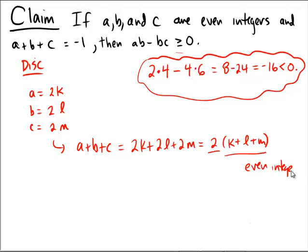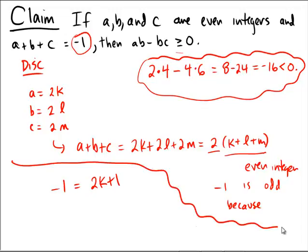However, the antecedent says that that's supposed to be equal to negative one. Negative one is odd because negative one can be written as 2k plus 1. Subtract one from both sides, negative two equals 2k, and then divide by two, and we get that negative one equals k.